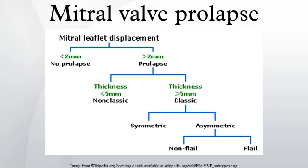The mitral valve, so named because of its resemblance to a bishop's mitre, is the heart valve that prevents the backflow of blood from the left ventricle into the left atrium of the heart. It is composed of two leaflets, one anterior and one posterior, that close when the left ventricle contracts. Each leaflet is composed of three layers of tissue: the atrialis, fibrosa, and spongiosa.